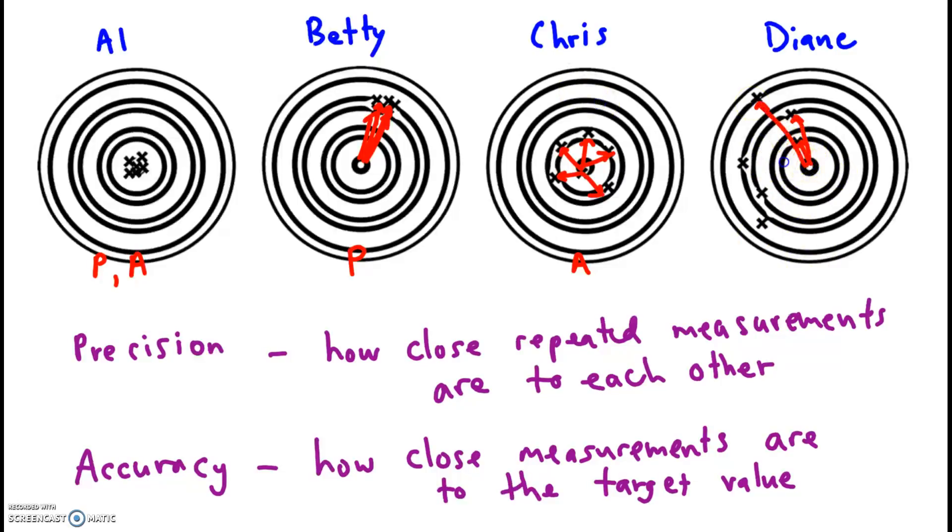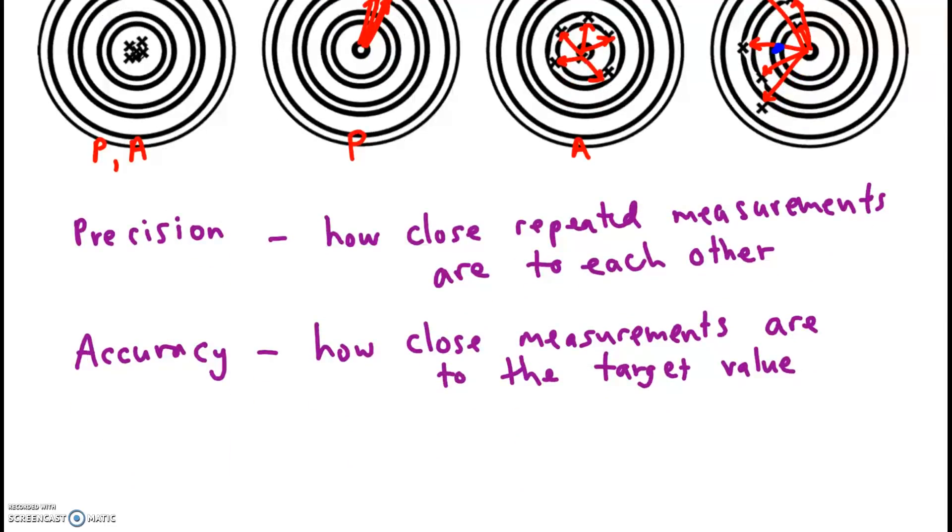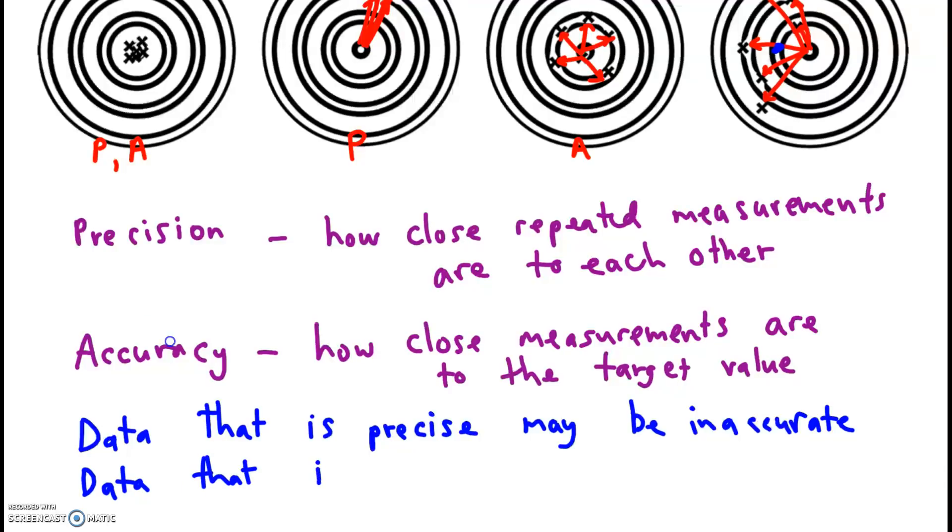There's some, if we were to average together all these positions, the average might be somewhere over here. So notice, it is totally possible for data to be precise and not accurate. Data that is precise may be inaccurate. And on the flip side, data that is inaccurate may be imprecise. So just because your data is one does not mean it's going to also be the other.